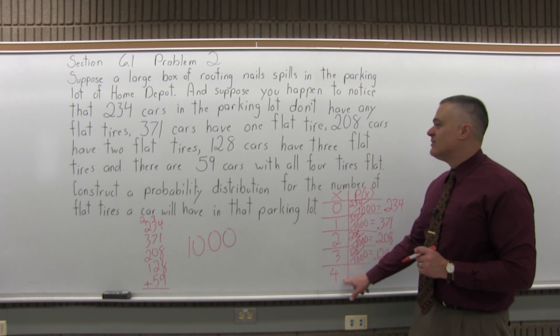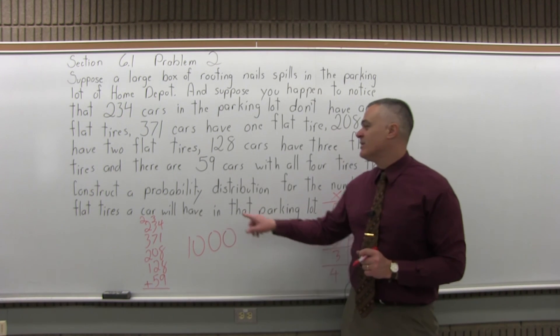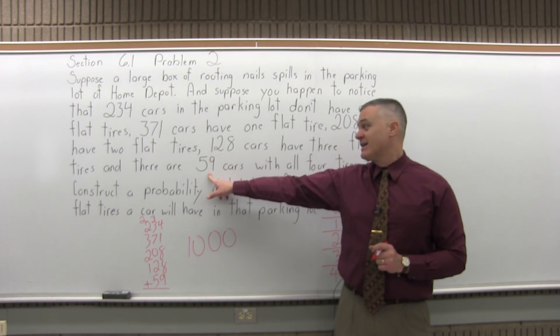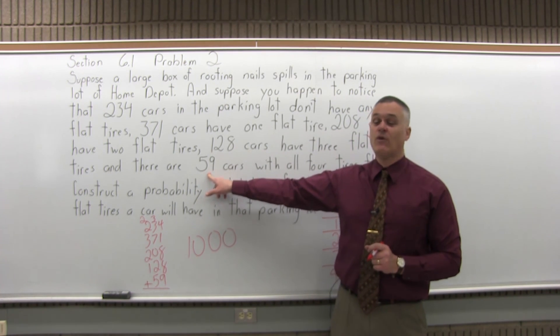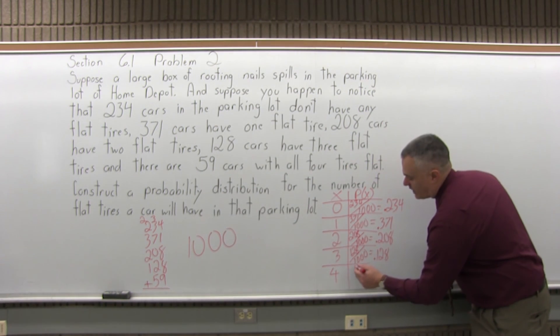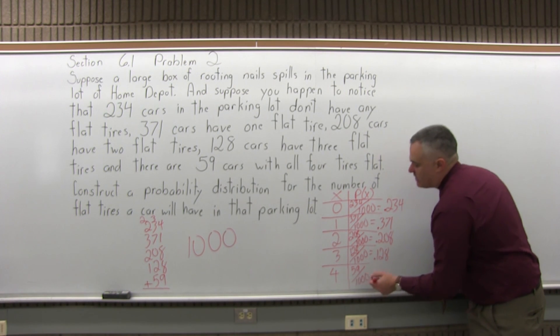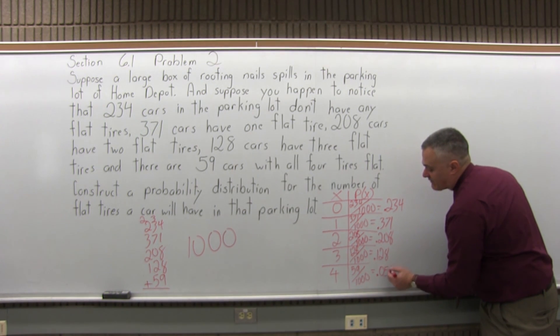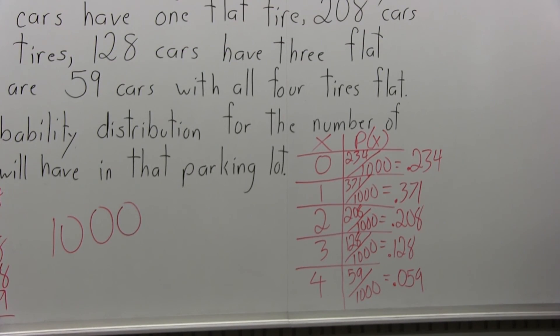And finally, what is the probability that you are one of the very unlucky people with all four tires on your car flat? There are 59 cars in the parking lot altogether where all four tires are flat out of the 1,000 cars in the parking lot, so it would be 59 over 1,000, or if you like decimals better, it would be 0.059, so almost a 6% probability.